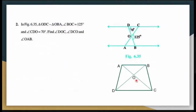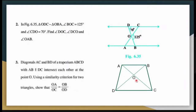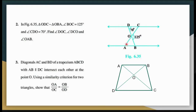Let us take up question 2 now. It is given that triangle ODC is similar to triangle OBA. That means angle D should be equal to angle B. If angle D is 70, then angle B also comes out to be 70. By the linear pair, the adjacent angle is 55, so by the angle sum property, the remaining angle also comes out to be 55.